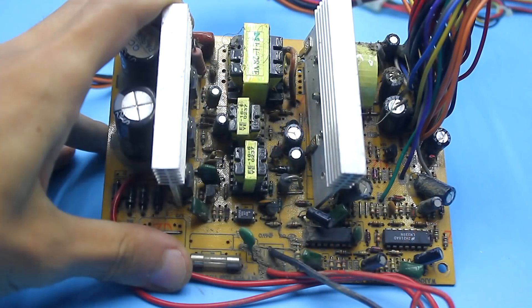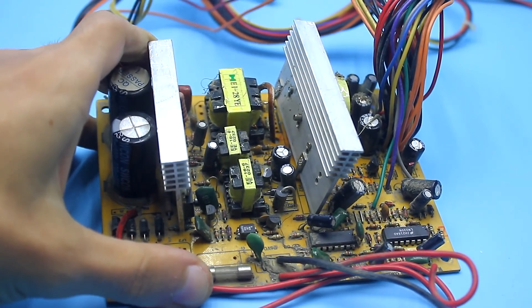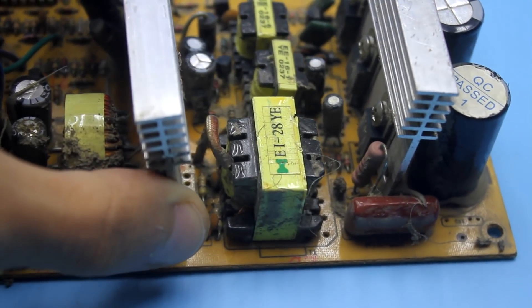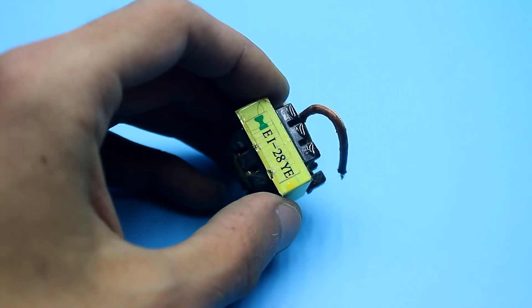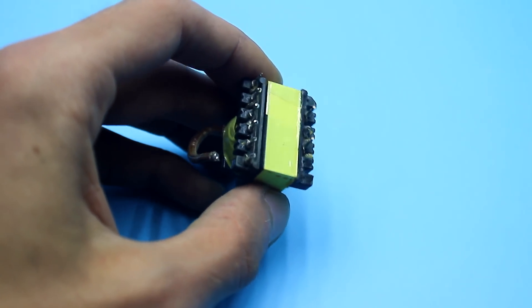More precisely, there are three: the transformer of the standby voltage, the control and the main one. It's impossible to mix up the power transformer with others. It's the biggest one. We carefully remove it and send the module back to the attic.